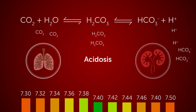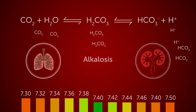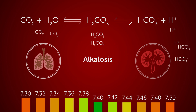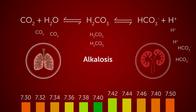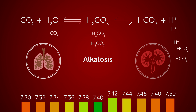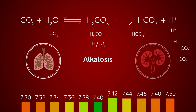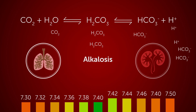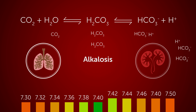On the other hand, alkalosis occurs when blood pH rises above 7.42 due to decreased pressures of CO2 in the blood, or high levels of HCO3-, both shifting the equilibrium to the left.